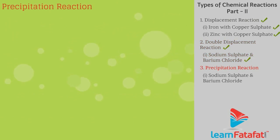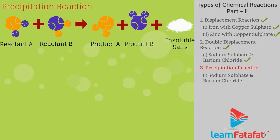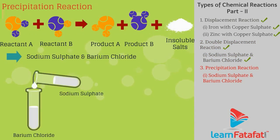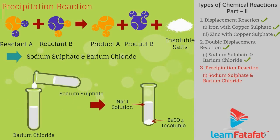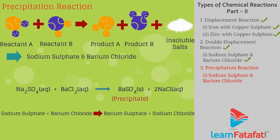Precipitation reaction: Any reaction that produces a precipitate (insoluble salt). Example — when sodium sulfate solution is mixed with barium chloride solution, white insoluble barium sulfate (BaSO4) is formed: Na2SO4 + BaCl2 → BaSO4 + 2NaCl.